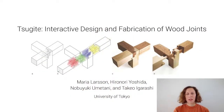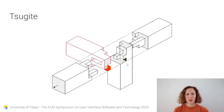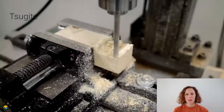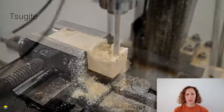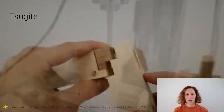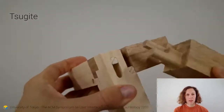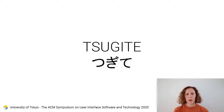Hello, my name is Maria Larsson. Now I will present our paper Tsugite, Interactive Design and Fabrication of Wood Joints. We propose a system to facilitate the creation of joinery while considering practical criteria including machine restrictions and material properties. We call it Tsugite from the Japanese word for joinery.